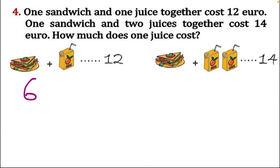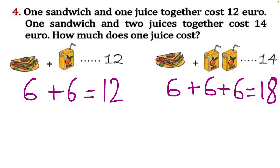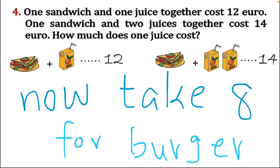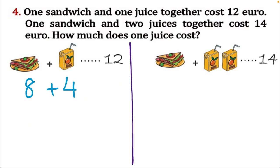We can only take even numbers for the burger and juice by supposition. Suppose burger equals six: six plus six equals twelve — correct for the first equation. But six plus six plus six equals eighteen, which is not equal to fourteen — so six is wrong for the burger. We skip seven because we are not using odd numbers. Try eight for the burger: eight plus four equals twelve, but eight plus four plus four equals sixteen, which is not fourteen — so eight is also wrong.